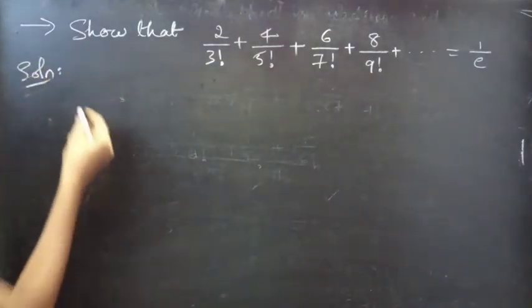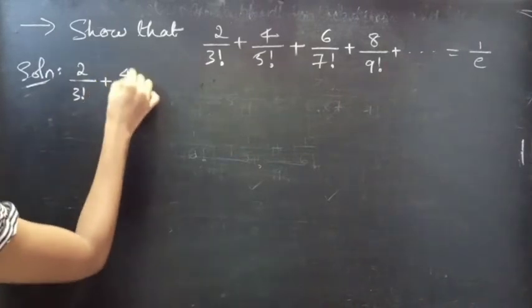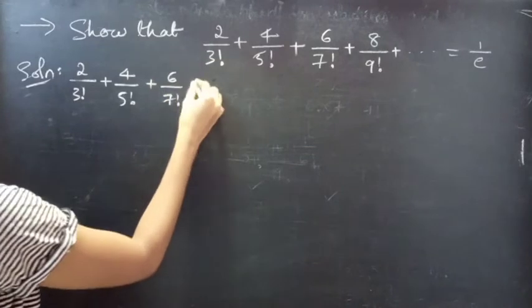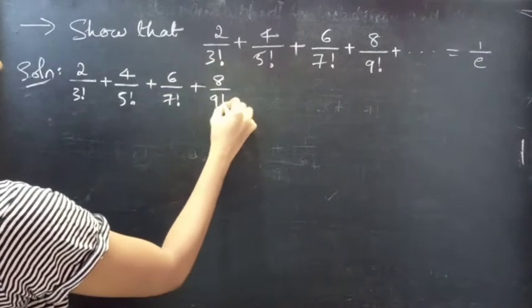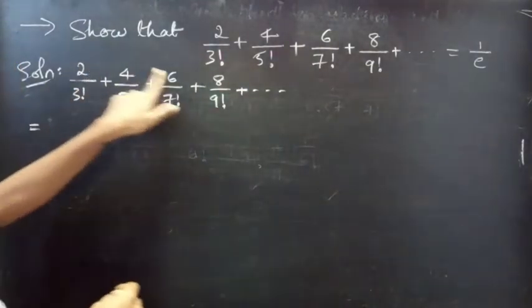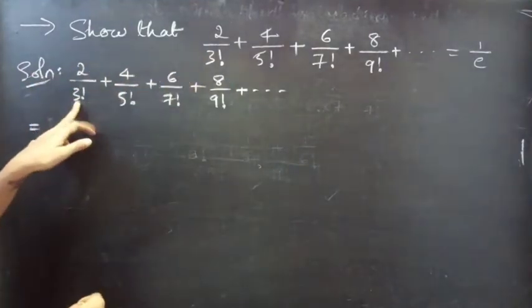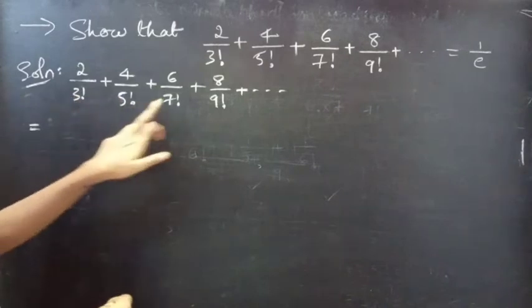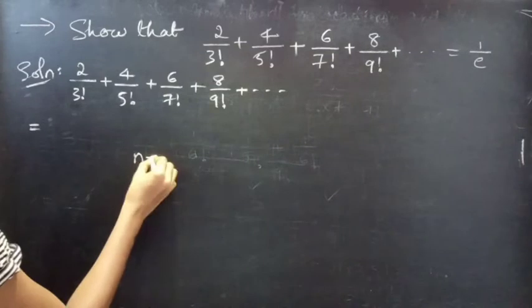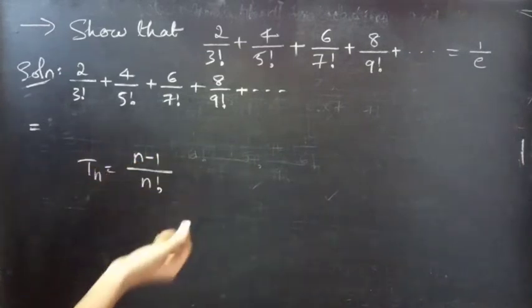Let's consider the LHS part. We have 2/3! + 4/5! + 6/7! + 8/9! + so on. The numerator has even numbers and in the denominator you have 3, 5, 7, 9 — so the general term Tn is (n-1)/n!.